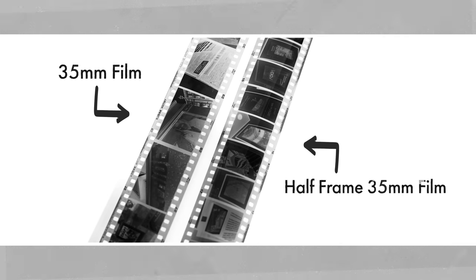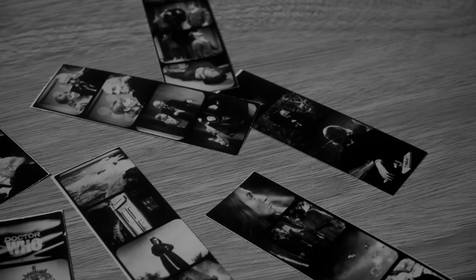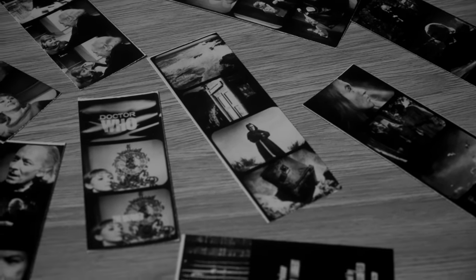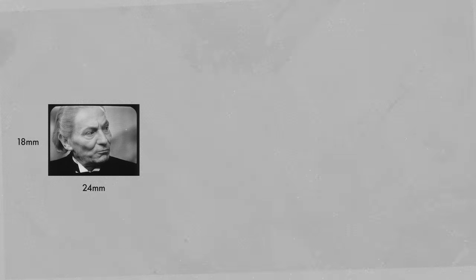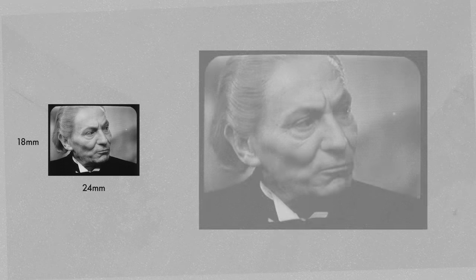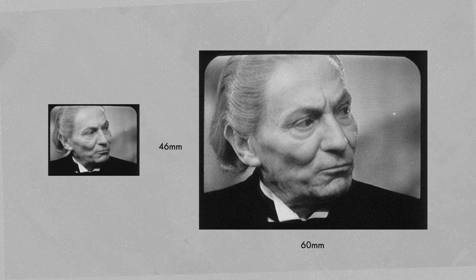So what is the John Cura method — why were his photos better than anyone else's? John's Telesnap camera, of his own invention, used 35mm film. He utilised half-frame photography, which means he could fit twice as many photos compared to a standard roll of film. This was to save money, and since the Telesnaps themselves were quite small, this was a large enough format. These Telesnaps were available in two sizes: standard miniatures measuring 24mm by 18mm, and enlarged miniatures measuring 60mm by 46mm.